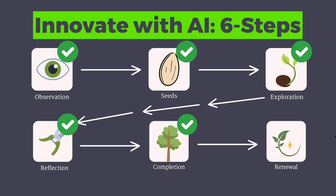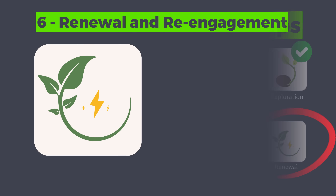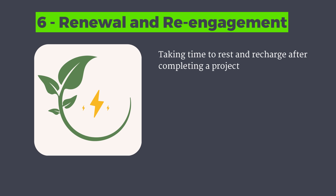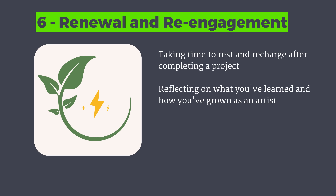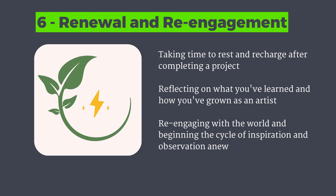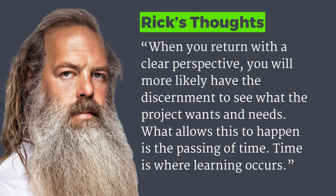The final step is renewal and reengagement. This part of Rick Rubin's process talks about taking time to rest and recharge after completing a project, reflecting on what you've learned and how you've grown. It also involves reengaging with the world and beginning the cycle of inspiration and observation anew — it's a circular process. Rick Rubin talks about returning with a clear perspective, and it's through this process that true learning can occur. He also talks about unlearning, which can be a useful concept.